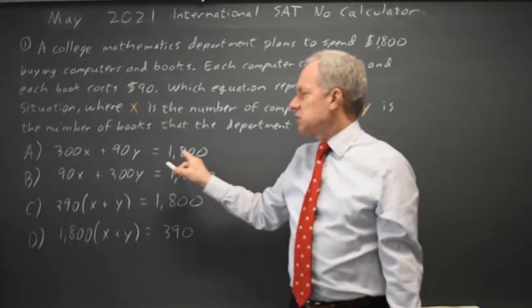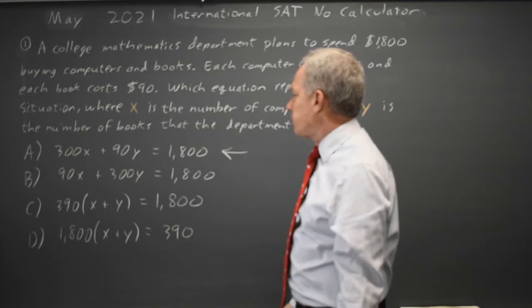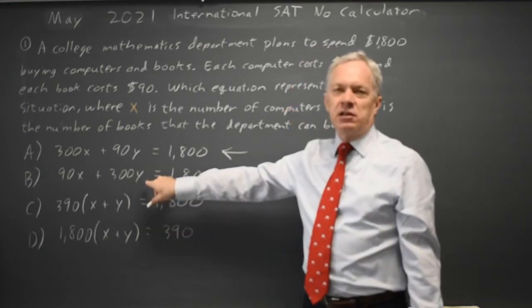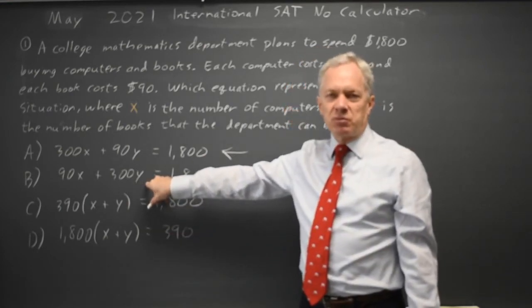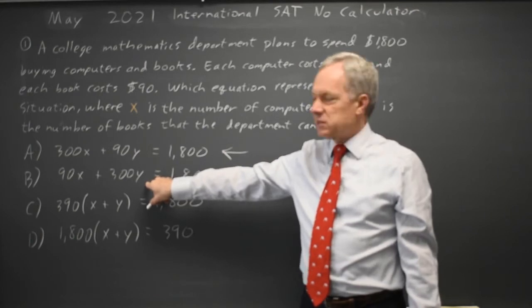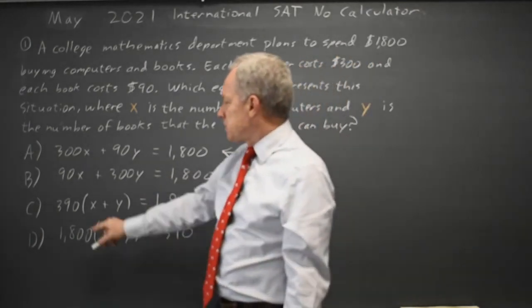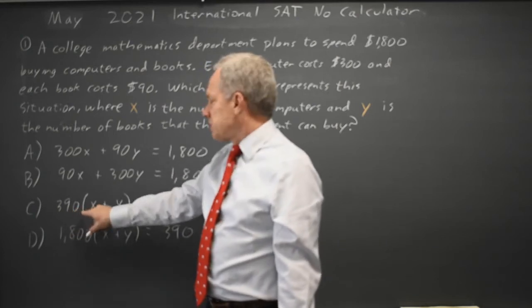amount spent, which is $1,800. So that would be equation A. Choice B multiplies the price per book by the number of computers, which does not make sense. Choice C takes the sum of the two prices and multiplies that